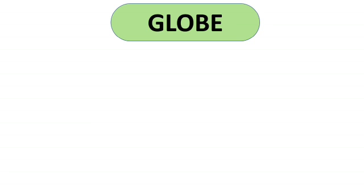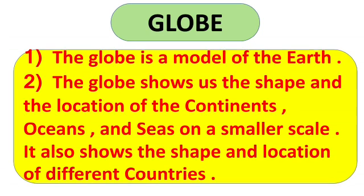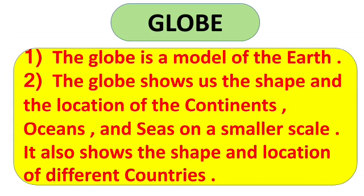So first we will discuss about the globe. What is a globe? The globe is a model of the earth which shows us its different features on a smaller scale. The globe shows us the shape and location of the continents, oceans, and seas on a smaller scale. It also shows the shape and location of different countries.